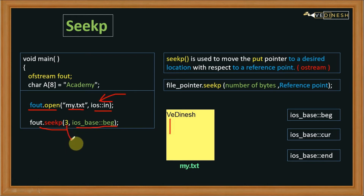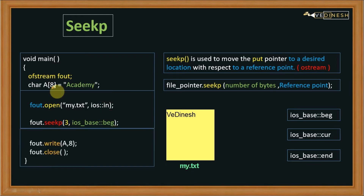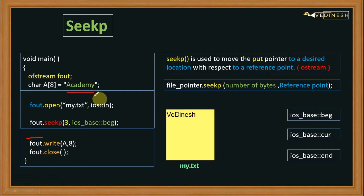After that, we call the seekp function with the reference point set to beginning, pointing to the start of the file, and we want to move 3 bytes ahead. After that, we write our character array 'Academy' into the file using the fout stream object, which writes those characters into the file. Finally, we close the file.